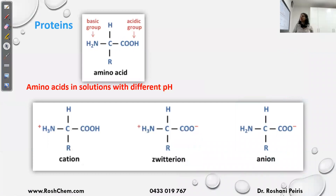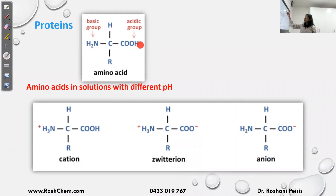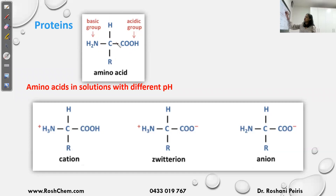First we'll look at proteins. Proteins are made from amino acids. The structure of an amino acid is given here — this is called an alpha amino acid, or 2-amino acid. It has a C double bond OH group, then an NH2 group. The middle carbon has a hydrogen and an R group. The COOH carbon takes carbon number one, and carbon number two has the NH2 group — that's why we call it a 2-amino acid.